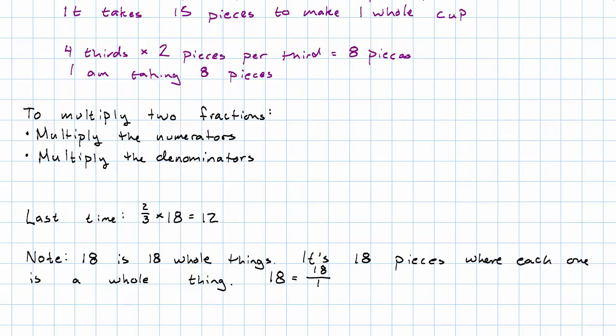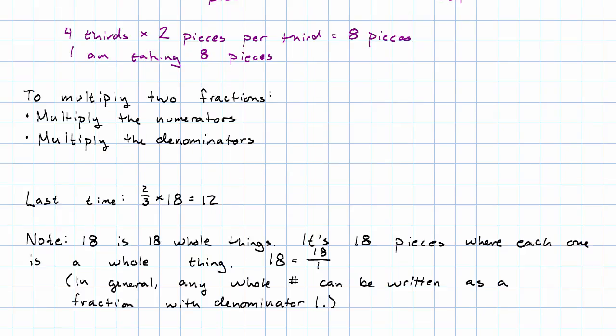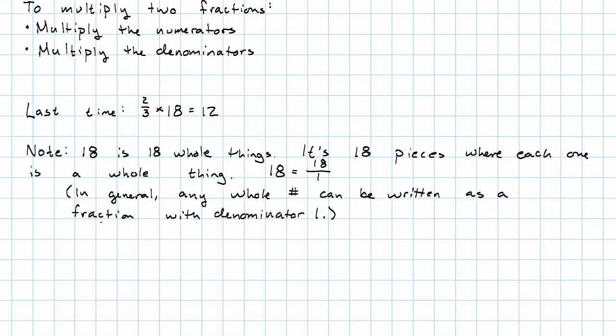More generally, any whole number can be written as a fraction with denominator 1. When we do that, so we'll have 2/3 times 18, we'll have 2 times 18 over 3 times 1.